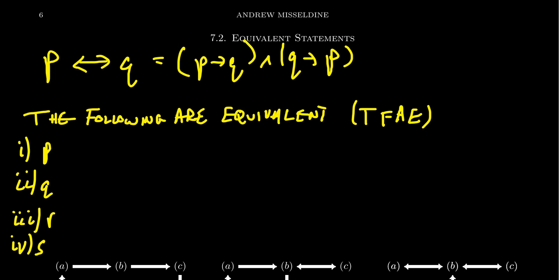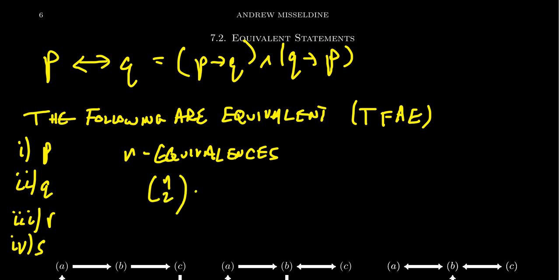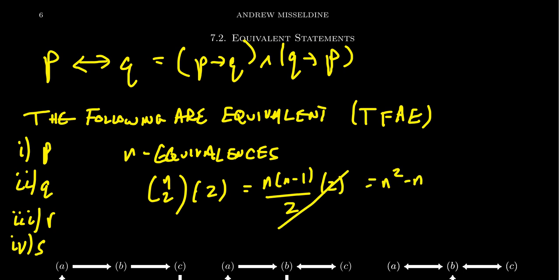How would one go through the details of all of those? If you have N equivalent statements and you have to prove every possible equivalence, you're going to have N-choose-2 pairings, and then you go in both directions, so you multiply by two. You end up with N²-N conditionals that you have to prove. If you throw in 20, you're going to have around 400 conditionals — that can get out of control very quickly. But it turns out you don't have to do every possible check to show that these things are all equivalent.